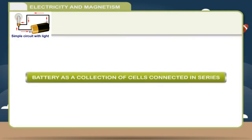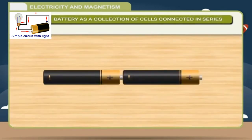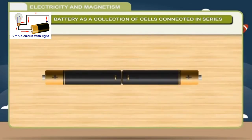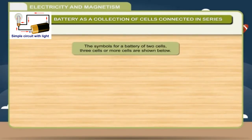Battery as a collection of cells connected in series. Battery हम दो या दो से ज्यादा cells की बना सकते हैं. Battery में हम एक positive terminal को negative terminal से connect करते हैं. अगर हम battery के दोनों terminals, similar terminals को एक दूसरे से connect कर देते हैं तो आपका circuit काम नहीं करेगा. Similarly, battery will not work when we connect two negative terminals together. The symbols for a battery of two cells, three cells or more cells are shown below.